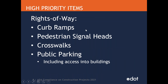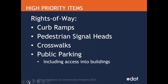There are some high priority items in the rights of way. Curb ramps are always a high priority item — a hot button topic that takes up a lot of our time in planning, construction, and design. Another area is pedestrian signal heads, which goes along with crosswalks. Public parking including access into buildings is another high priority item. These are also areas where we as a state DOT receive the highest number of complaints, and we have heard from some of our local partners that the same is true for them.